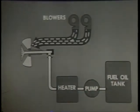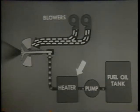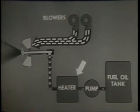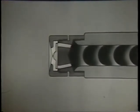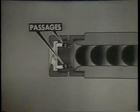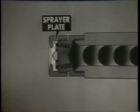The force draft blowers send a strong blast of air to the burner. The fuel oil pump sends the oil through the heater where the oil is heated to give it good flow qualities, then the oil is pumped to the burner. This simplified cutaway of the burner shows how the fuel oil is forced through the burner barrel to the atomizer nozzle, where a series of passages guide the oil to the sprayer plate. The sprayer plate makes the oil rotate at high speed, breaking up the oil into particles. The oil leaves the atomizer as a hollow, mist-like cone or spray.